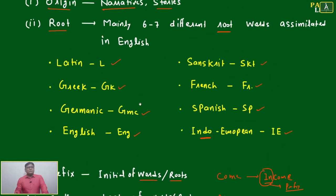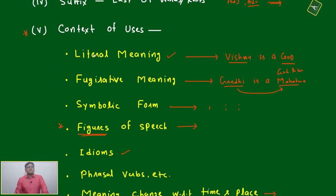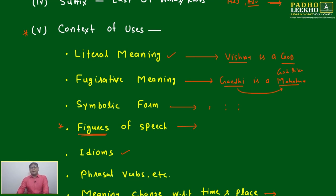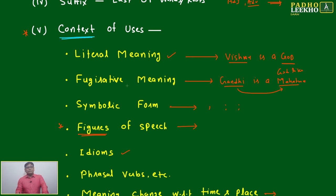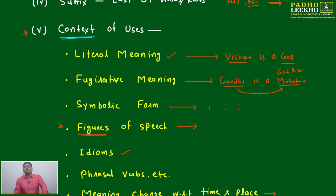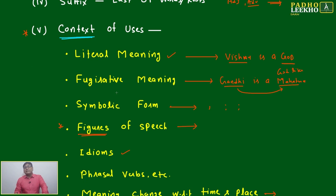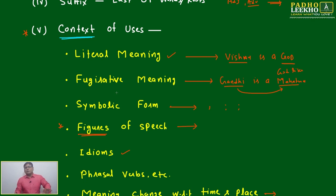Suffix, prefix, root, and origin are fixed. What is variable — we have to focus on the variable. Breaking it down like a linear equation in mathematics: your variable is the context of use. Keep much focus on that. To understand and develop the context of use, you have to develop a habit of reading — a lot of reading will be needed.